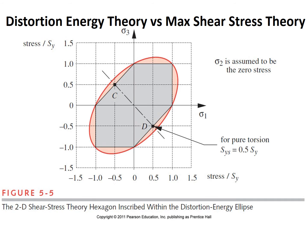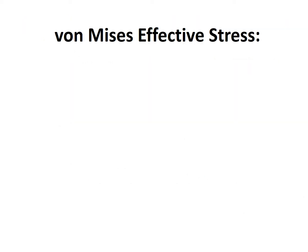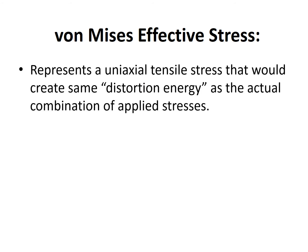Comparing to the normal stress theory, we see that our earlier example had failure occurring in a regime that the distortion energy theory would have correctly identified as failure. Comparing to the maximum shear stress theory, the shear stress theory region is still safe but more conservative than the distortion energy theory. However, the distortion energy theory is still considered safe, and that is what we will be looking at next.